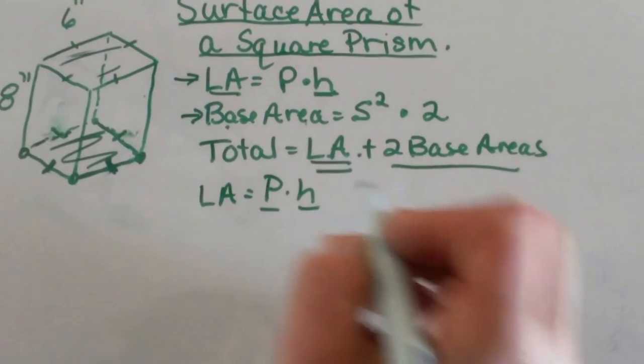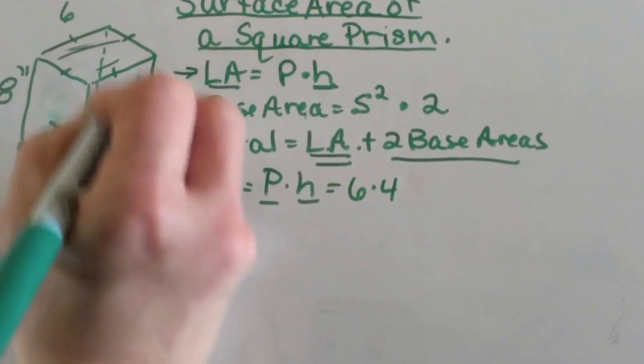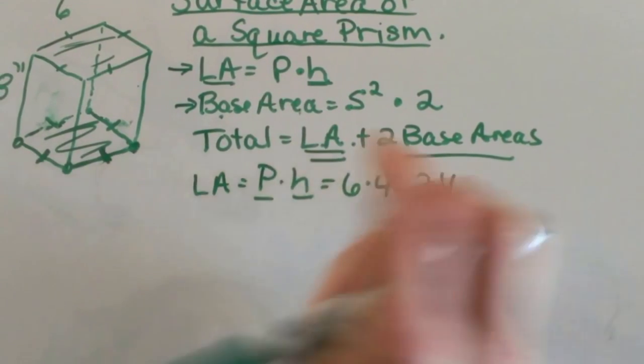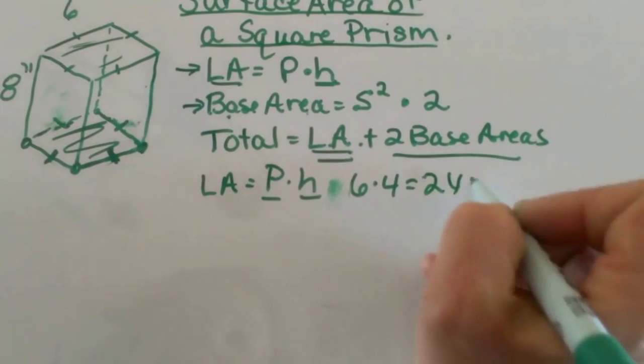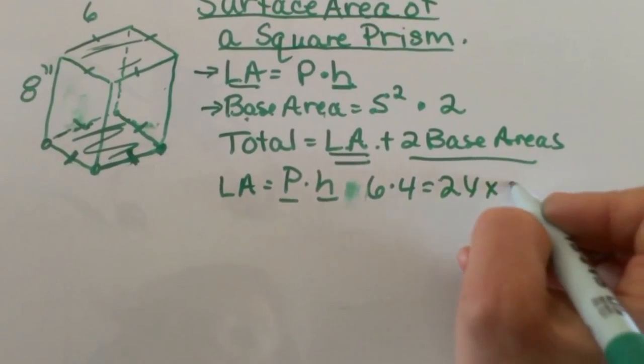Our base is square so the perimeter is 6 times 4 because we have 4 equal sides. So the perimeter is 24 and then we're going to take that times the height of the prism and that's 8.